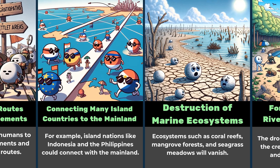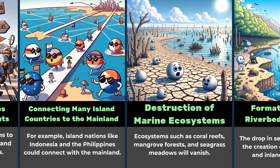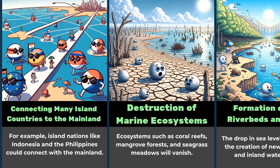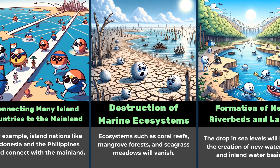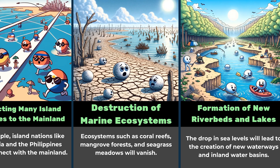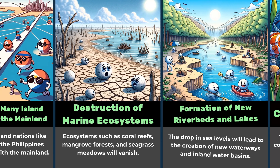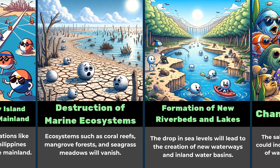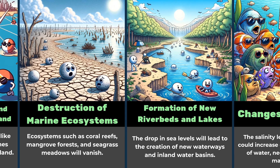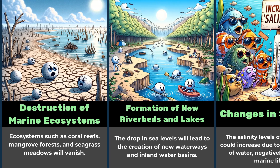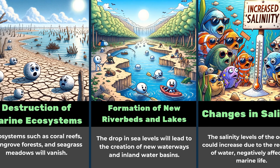Ecosystems such as coral reefs, mangrove forests, and seagrass meadows will vanish. The drop in sea levels will lead to the creation of new waterways and inland water basins.